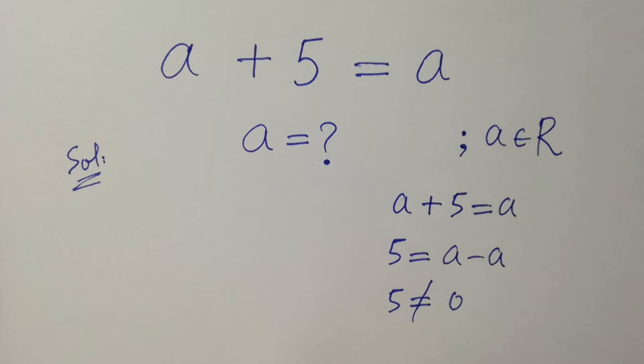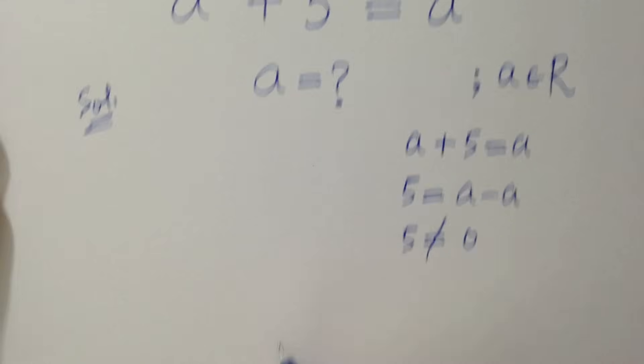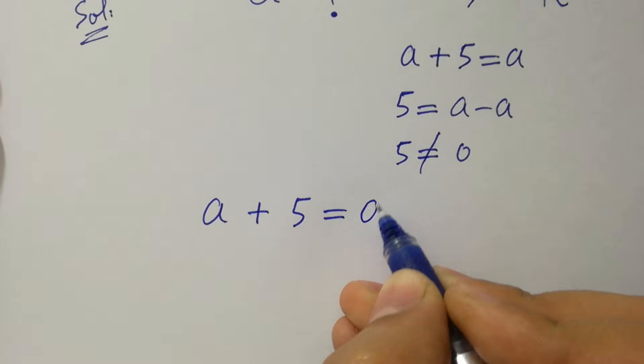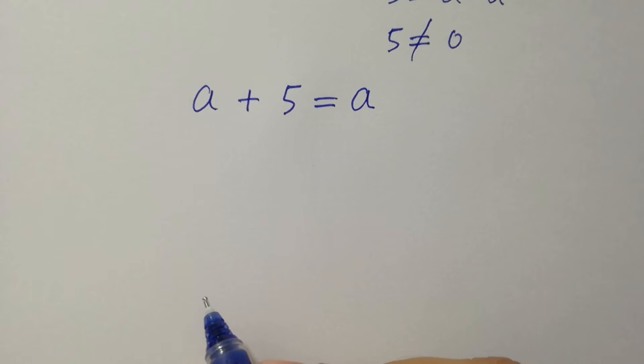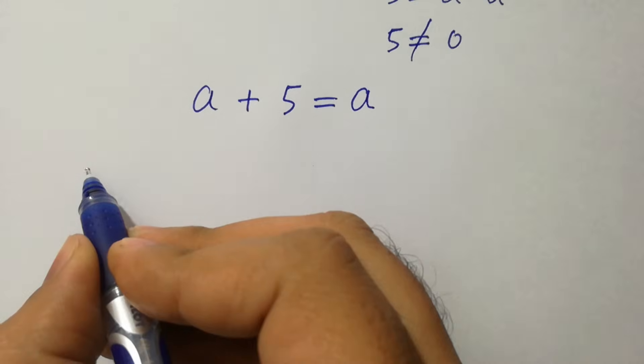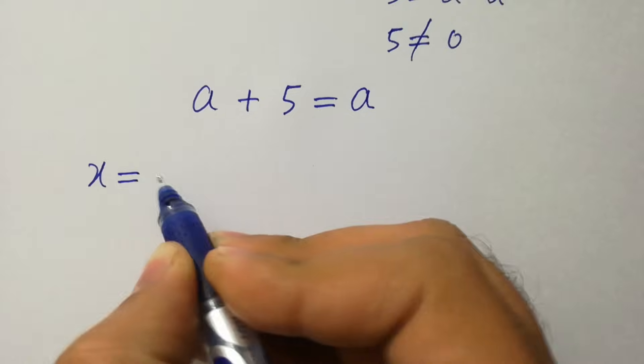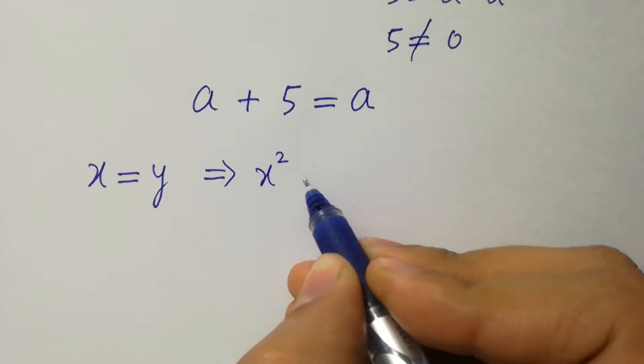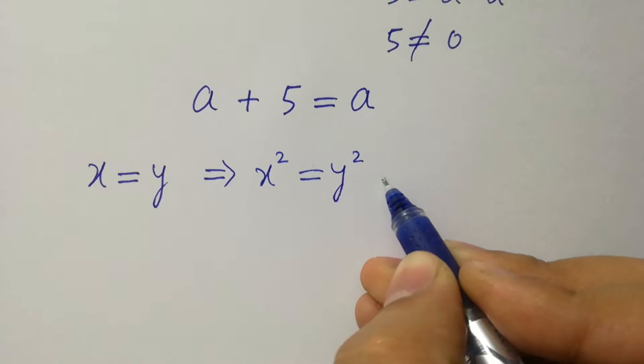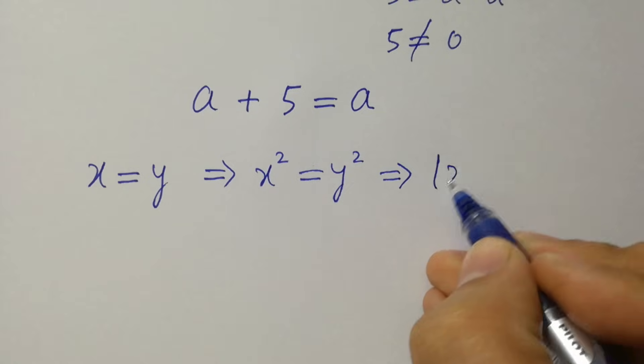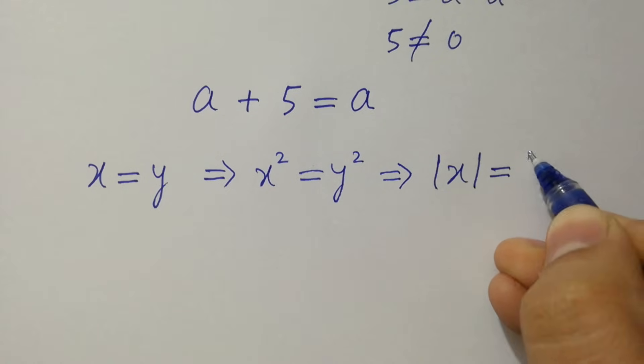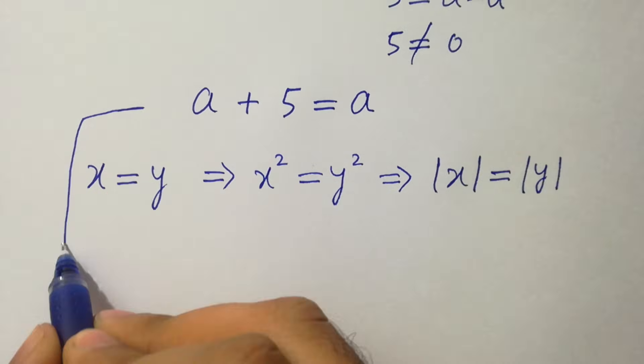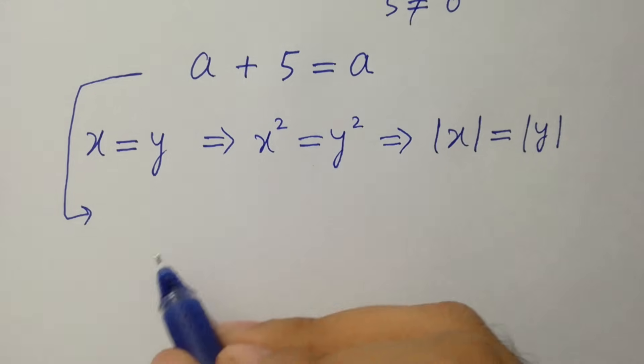Let's try another method to solve this problem of a plus 5 equal to a. By this we know that if x equal to y, then x square equal to y square. And also absolute value of x equal to absolute value of y. According to that, we can take square on both sides of this problem.